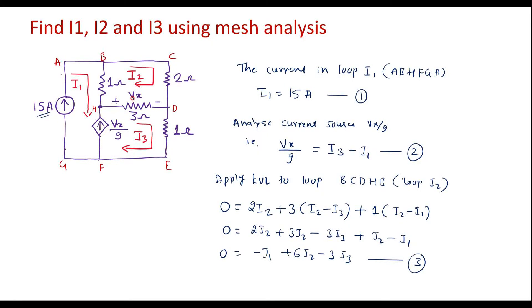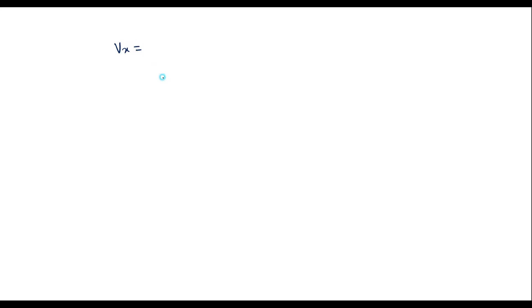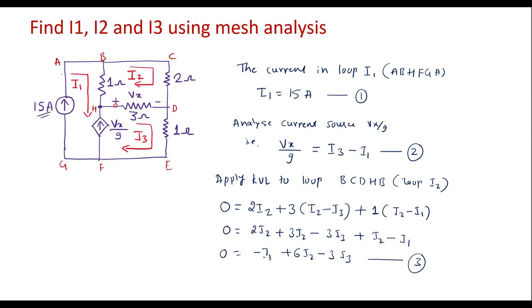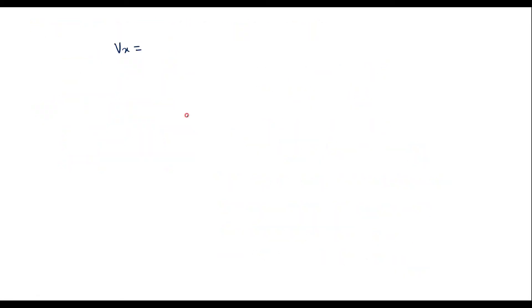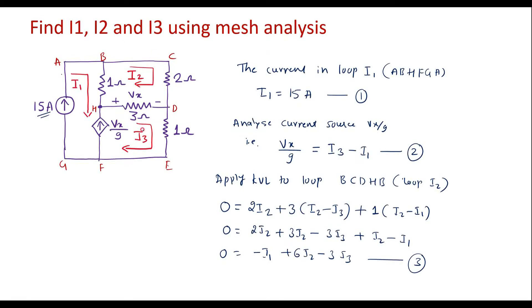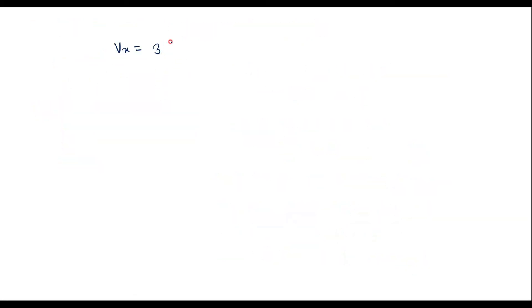Now, Vx is the voltage across the 3 ohm resistor. The polarity is plus on one side and minus on the other, meaning current entering the resistor is always positive. So I can write Vx = 3·(I3 − I2).